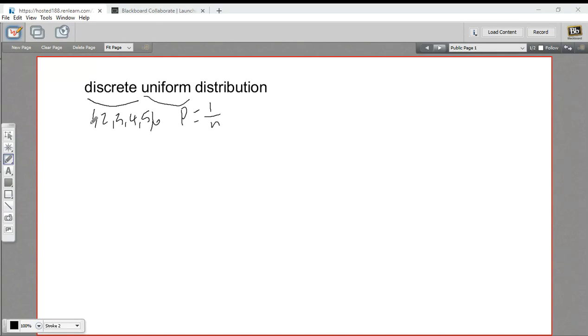So in this case, the probability of getting a one is one over six, one-sixth. You're going to get a one a sixth of the time on average, and same for the probability of a two, a three, et cetera. So that's the kind of distribution we're talking about, discrete uniform distributions.